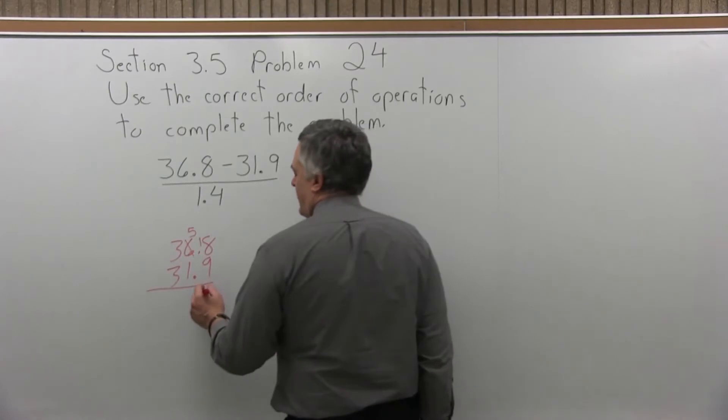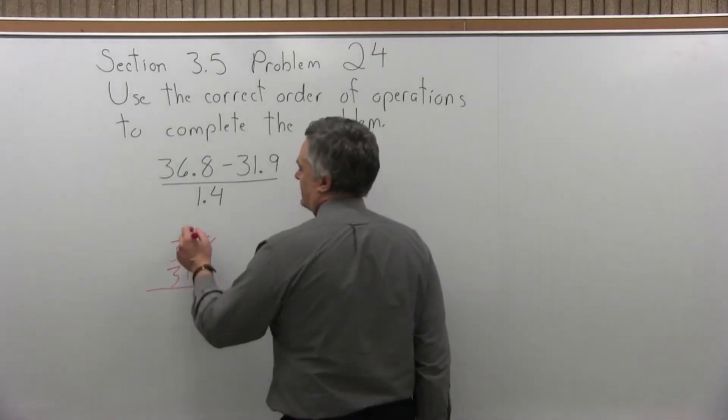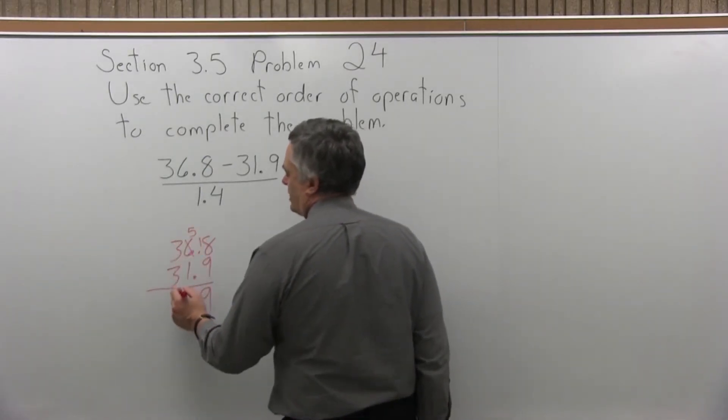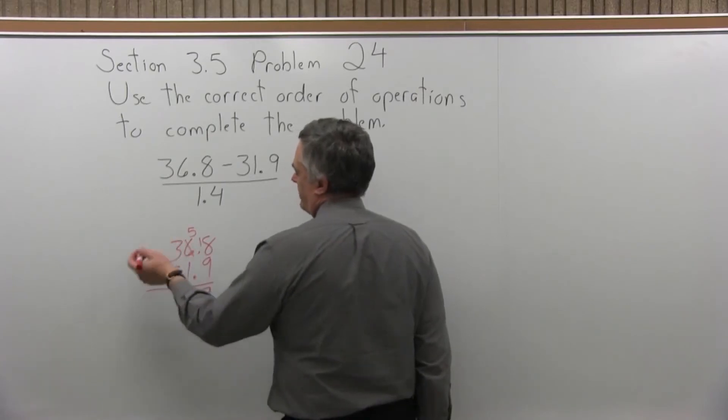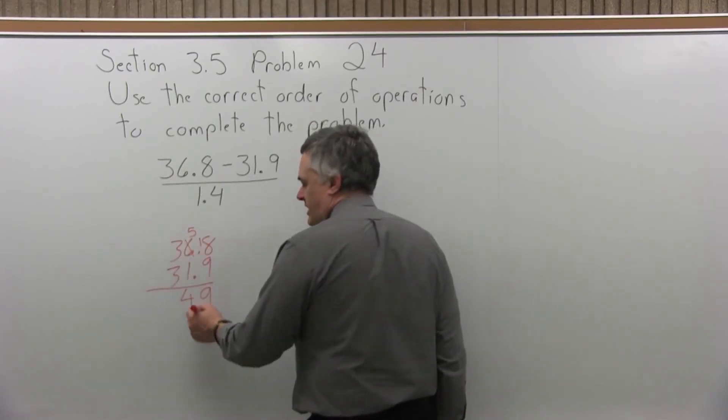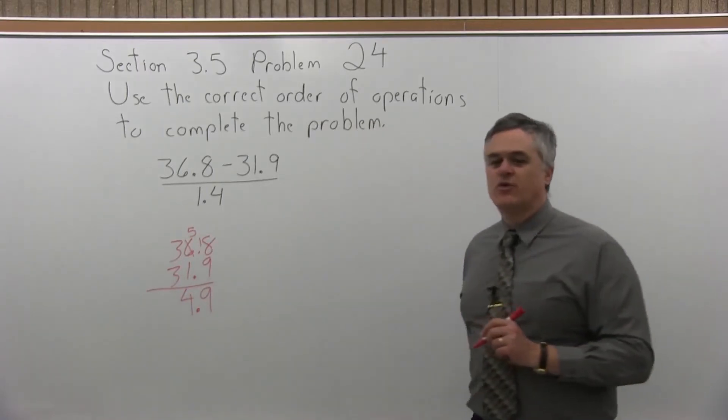18 minus 9 is 9. The next column over, 5 minus 1 is 4. Then the last column is just 3 minus 3. Those cancel off. Keep your decimal in line. And then it's going to come straight down, so it's 4.9.